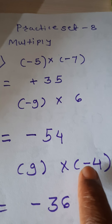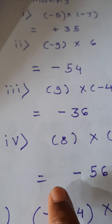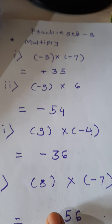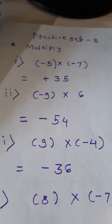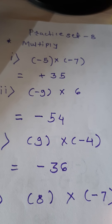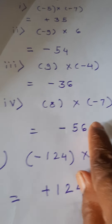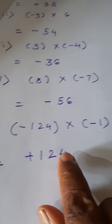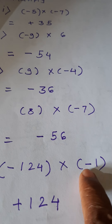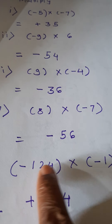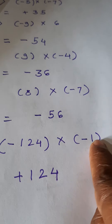Third example: 9 multiplied by negative 4. Here also one is positive and one is negative, so the answer is negative. 9 × 4 = 36 — as one number is negative, the answer is negative 36. Fourth example: 8 multiplied by negative 7. 8 × 7 = 56. Positive into negative is negative, so the answer is negative 56.